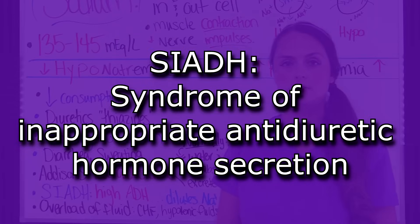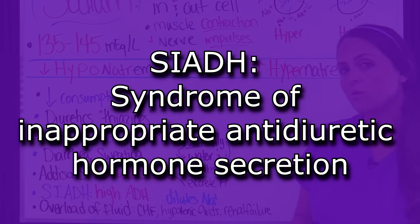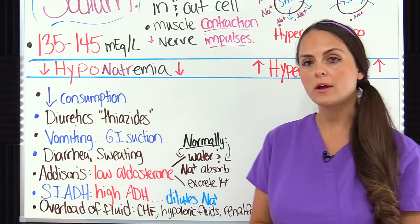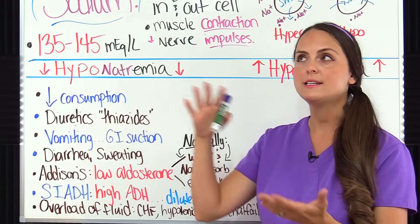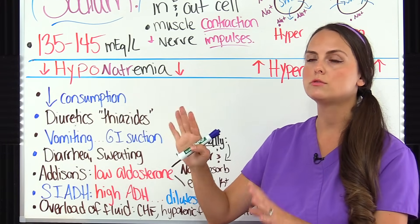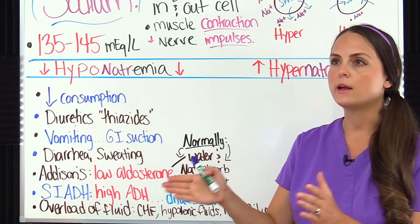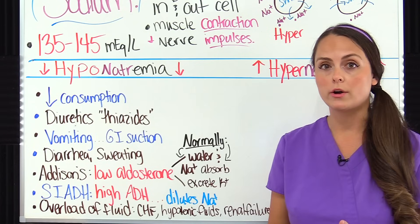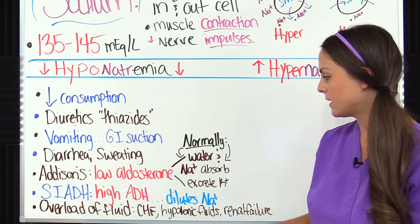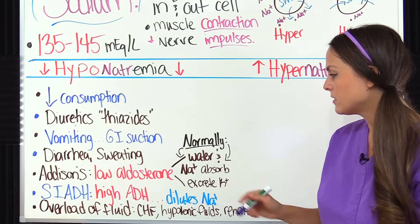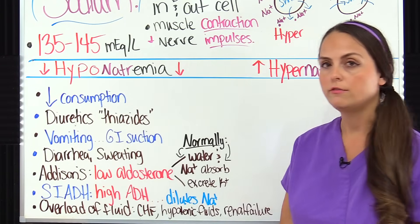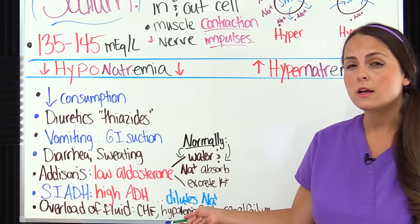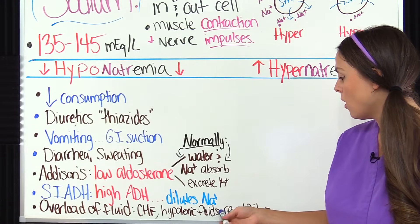SIADH — Syndrome of Inappropriate Antidiuretic Hormone Secretion — is where the body secretes too much ADH. Antidiuretic hormone causes the body to keep water rather than urinate it out, so we have more water in the body, which dilutes the sodium. Other conditions that can dilute sodium include fluid overload as in congestive heart failure, giving the patient too much of a hypotonic solution, or renal failure.